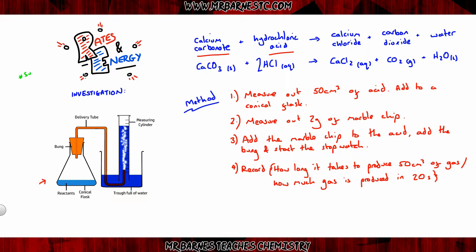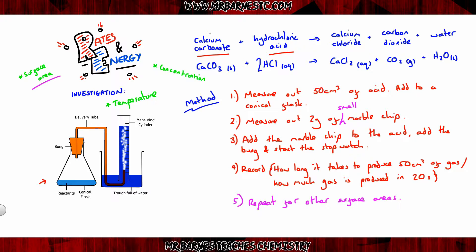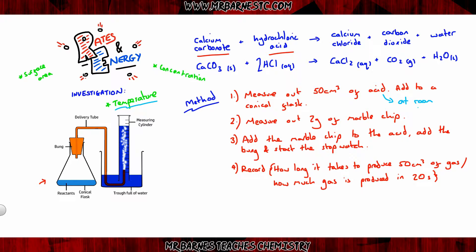There are three things you could investigate: surface area, concentration, and temperature. The method is exactly the same each time — change one independent variable and keep everything else controlled. For surface area, use 2 grams of small, medium, large, or powdered marble chip and record the time. For concentration, choose a starting concentration such as 0.1 mol/dm³ and repeat with different concentrations. For temperature, start at room temperature and repeat at 30, 40, 50 degrees, and so on.